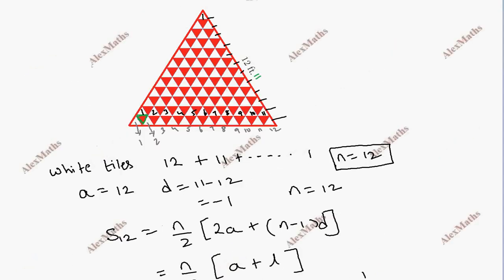Now, how many red colour tiles are there? Counting: 1, 2, 3, 4, 5, 6, 7, 8, 9, 10, 11. Next row: 1, 2, 3, 4, 5, 6, 7, 8, 9, 10. The red tiles also form a decreasing arithmetic sequence.